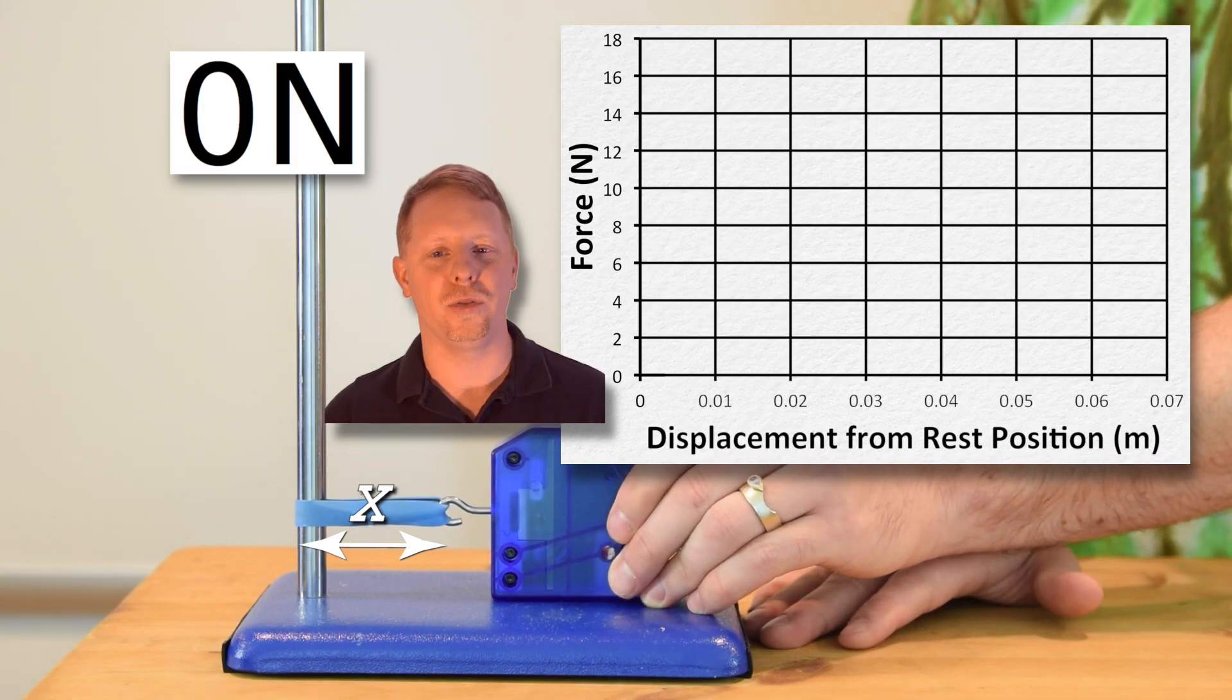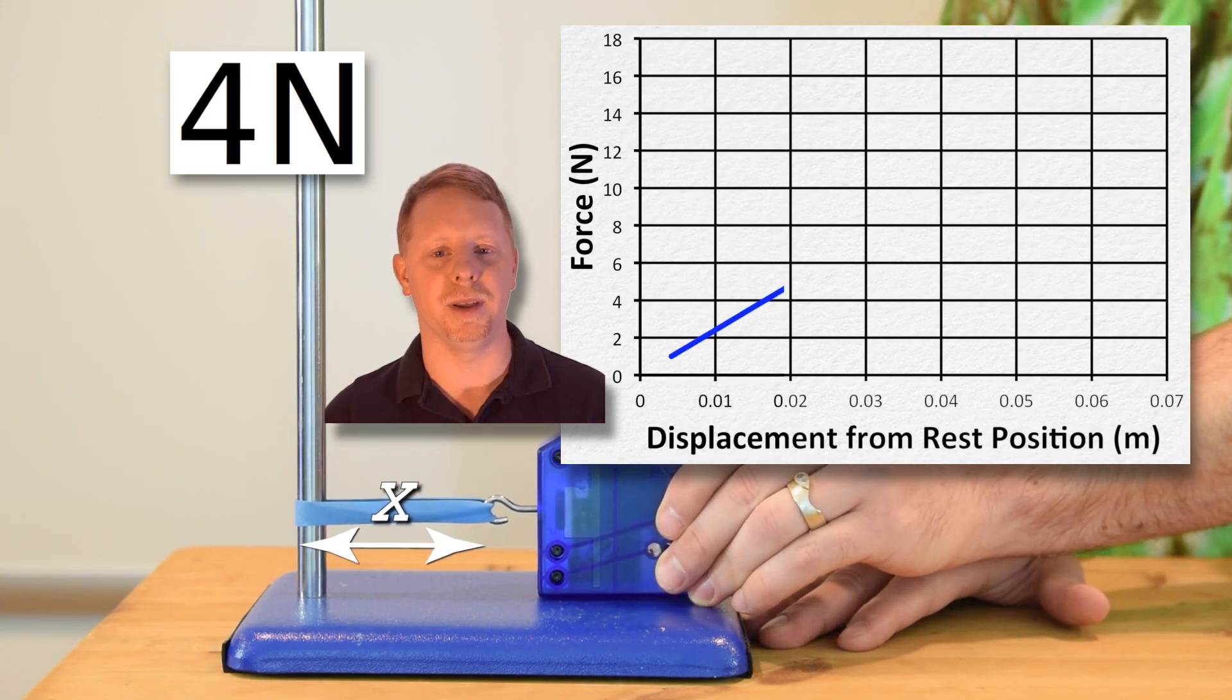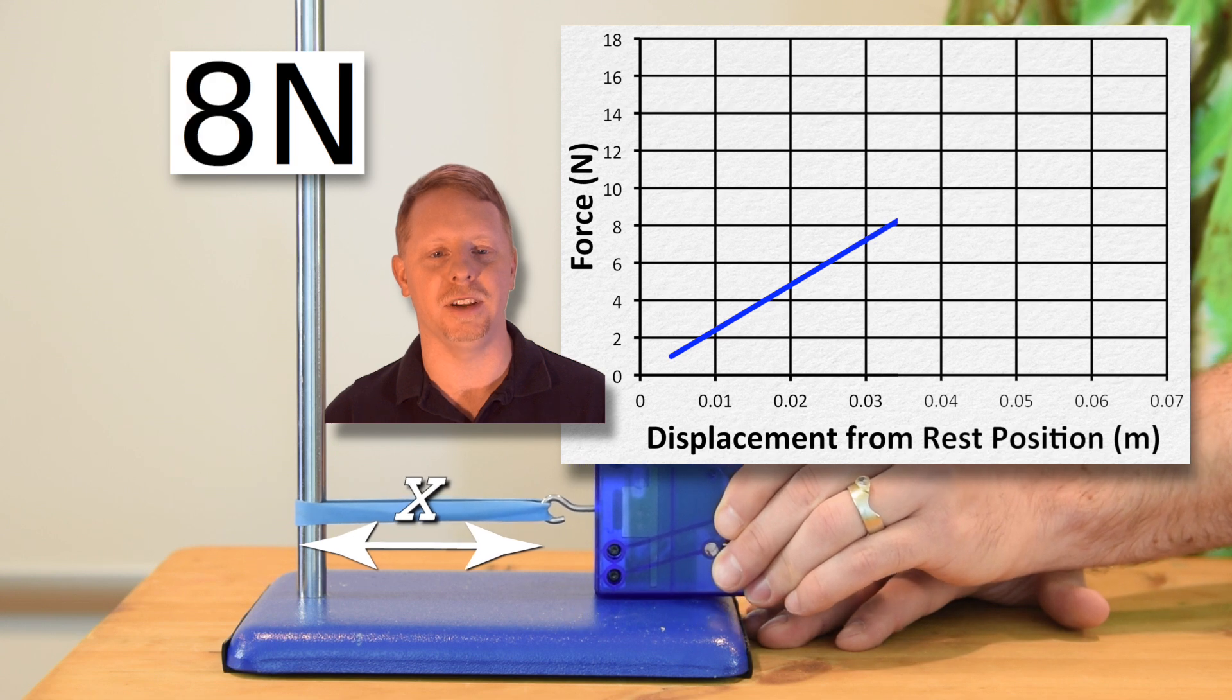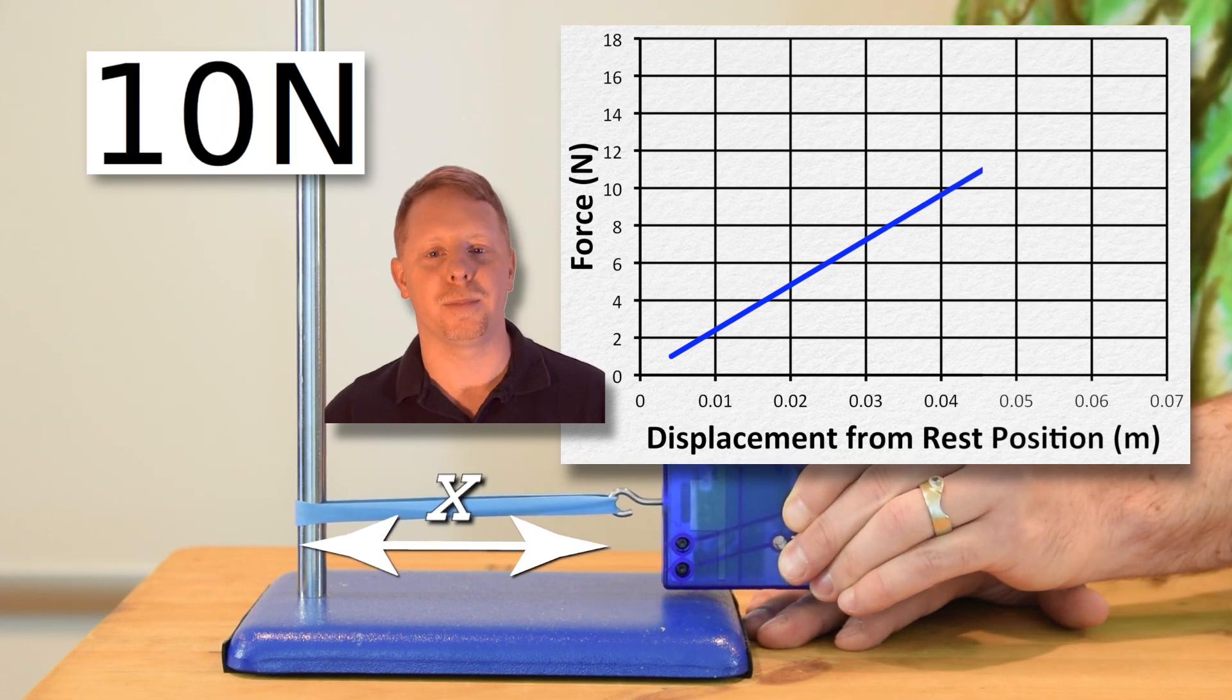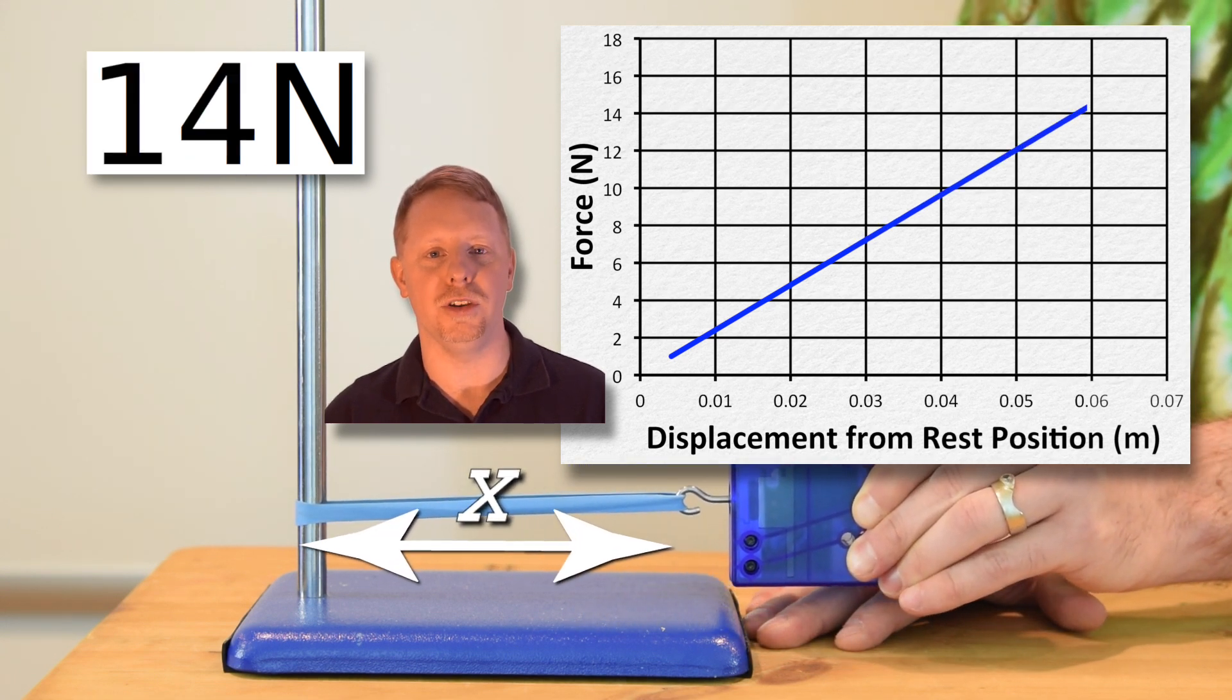As Mr. P pulls the rubber band to the right, the displacement from equilibrium position, or x, increases, and the force caused by the spring increases linearly, which you can see in the graph.